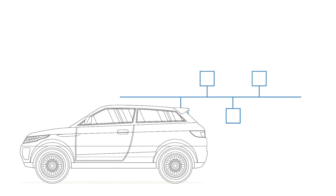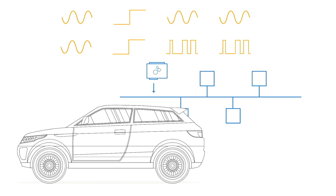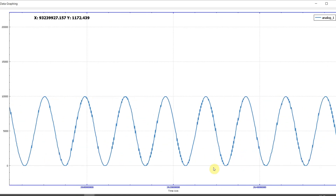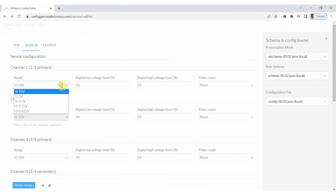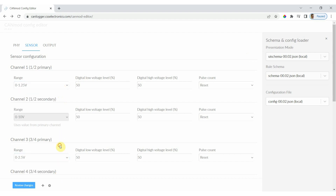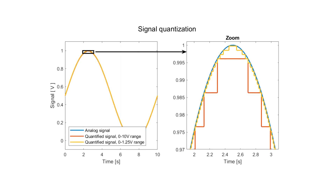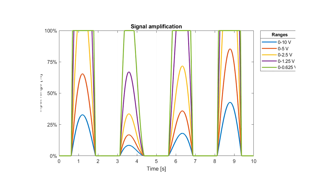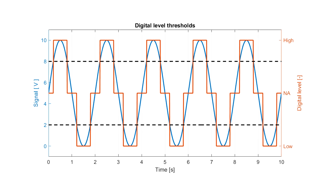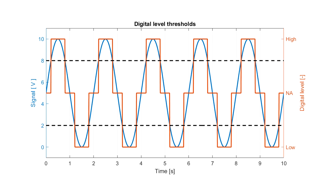Third, each input channel can be configured for analog, digital, or pulse measurements, meaning you can use a wide array of sensor types with the module. Specifically, the module performs analog measurements at a frequency of up to 1 kHz and a resolution of 10 bit. The input voltage range is configurable, with ranges spanning from 0 to 0.625 volts and 0 to 10 volts, allowing for optimal resolution and amplification. The module also performs digital input readings for each channel at a 1 kHz frequency with configurable low-high thresholds and optional hysteresis.